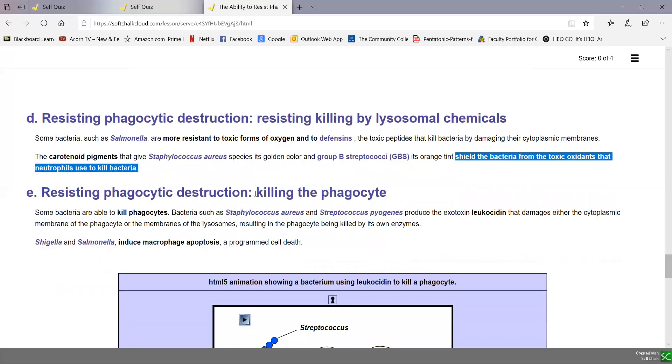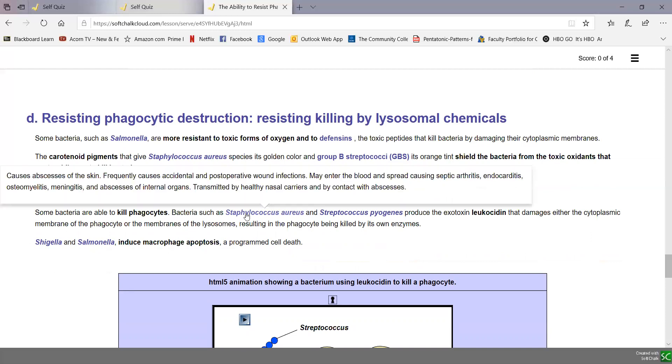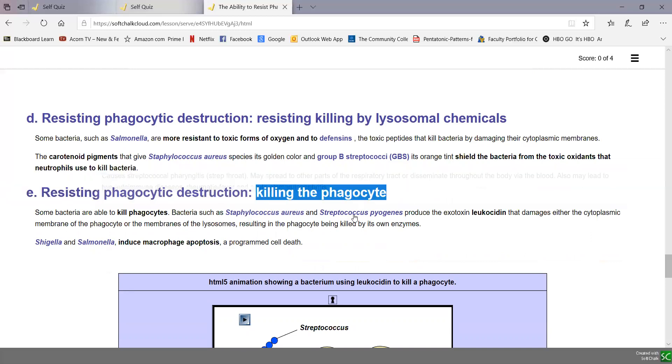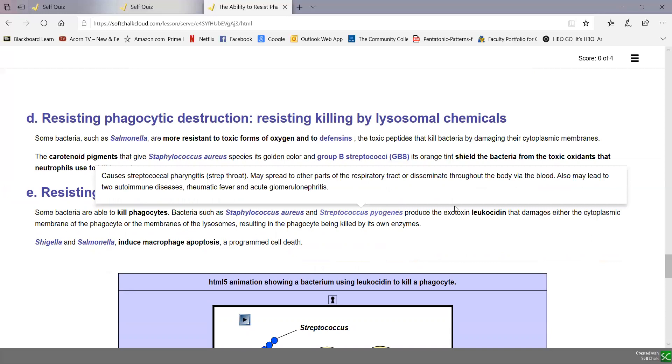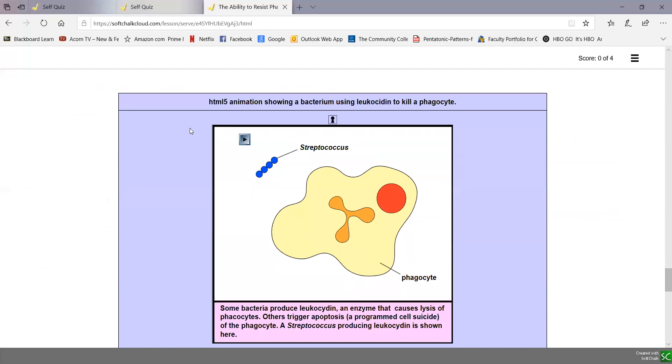Another way they can resist phagocytic destruction is actually killing the phagocyte. Some bacteria kill phagocytes. Staphylococcus aureus, that causes a lot of accidental postoperative wound infections, and Streptococcus pyogenes, that causes strep throat, both produce an exotoxin called leukocidin because it kills leukocytes, white blood cells, by damaging either the cytoplasmic membrane or the lysosomal membrane. These bacteria secrete toxins that kill white blood cells. These are often called pyogenic or pus-producing bacteria because they kill white blood cells with leukocidin. We see that in this animation where the streptococcus is releasing leukocidin, which is damaging the cytoplasmic membrane of the phagocyte, killing it.